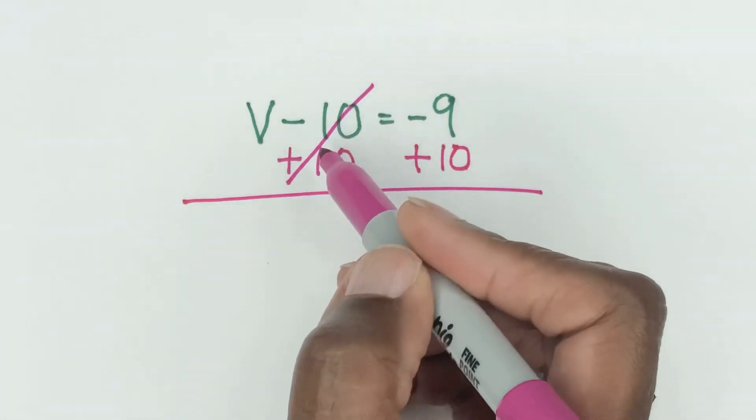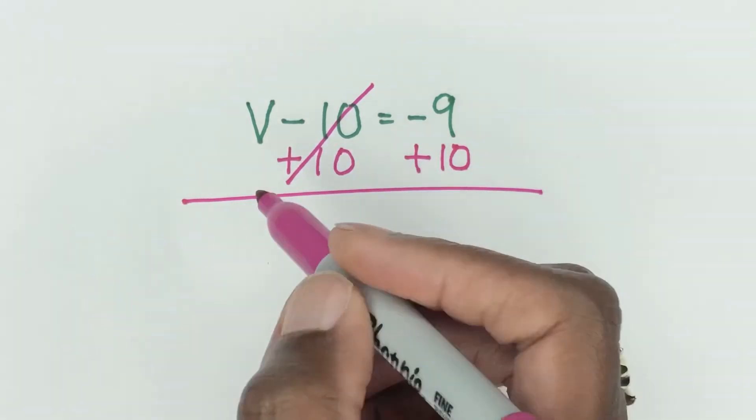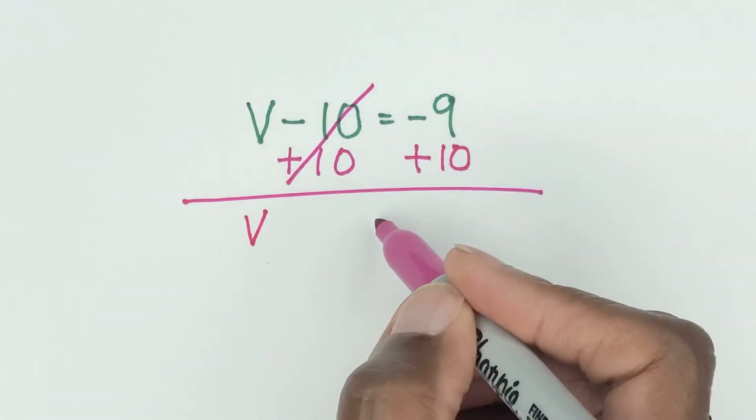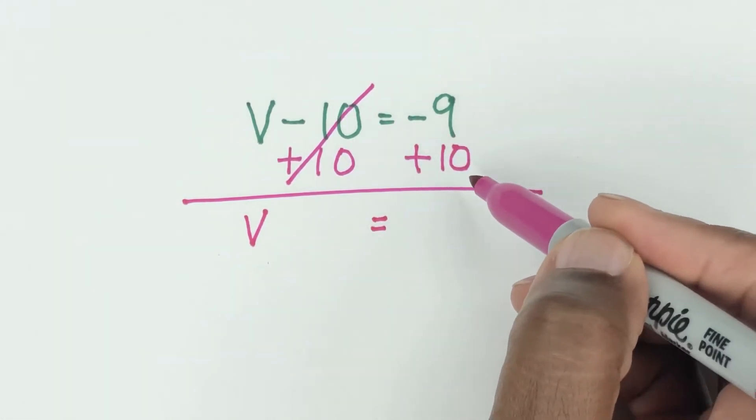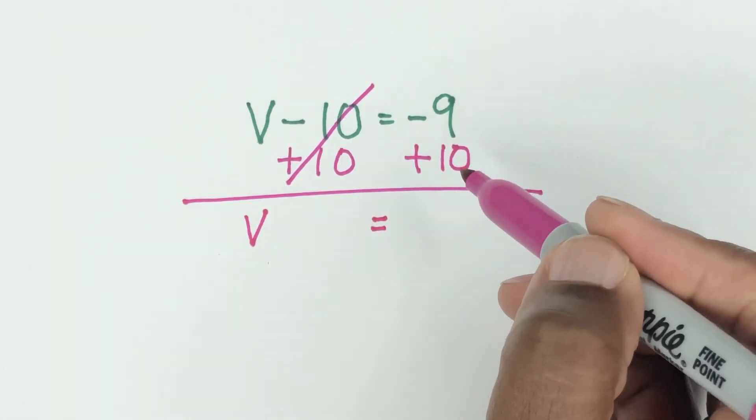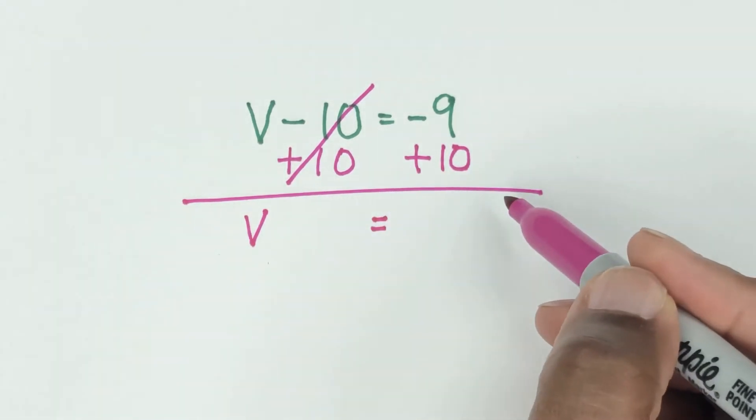So now we have gotten rid of this minus 10 that was with the V so the V is still there. So V, line up your equal sign, equals, and what's minus 9 plus 10? So on the number line if you're on minus 9 and you plus 10 that means you have come through the 0 and V equals 1.